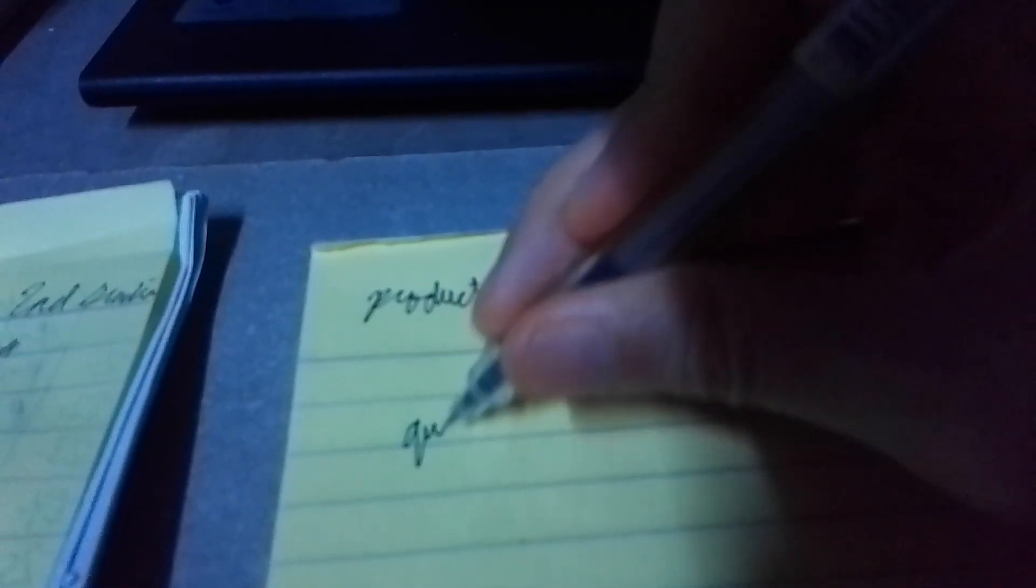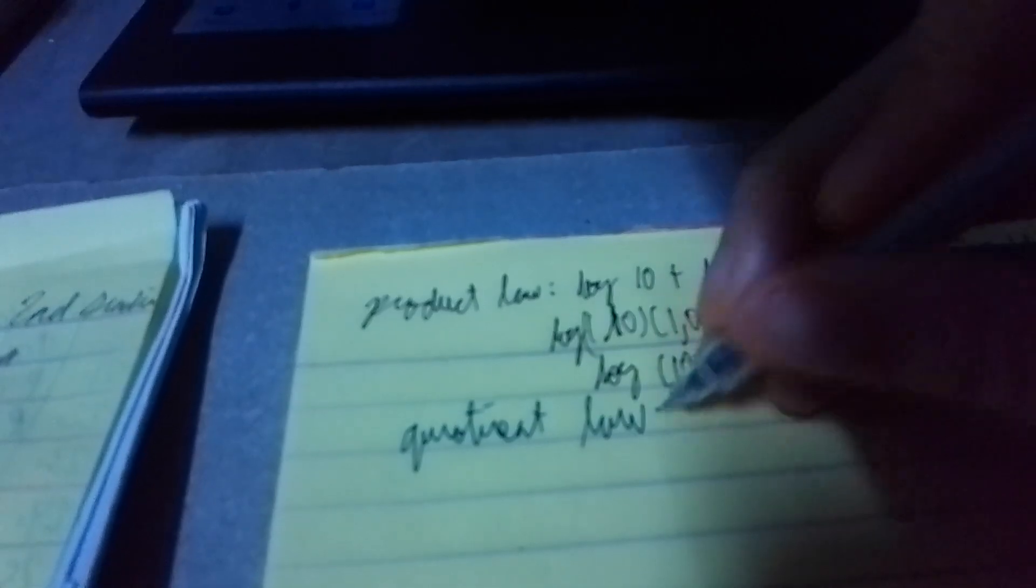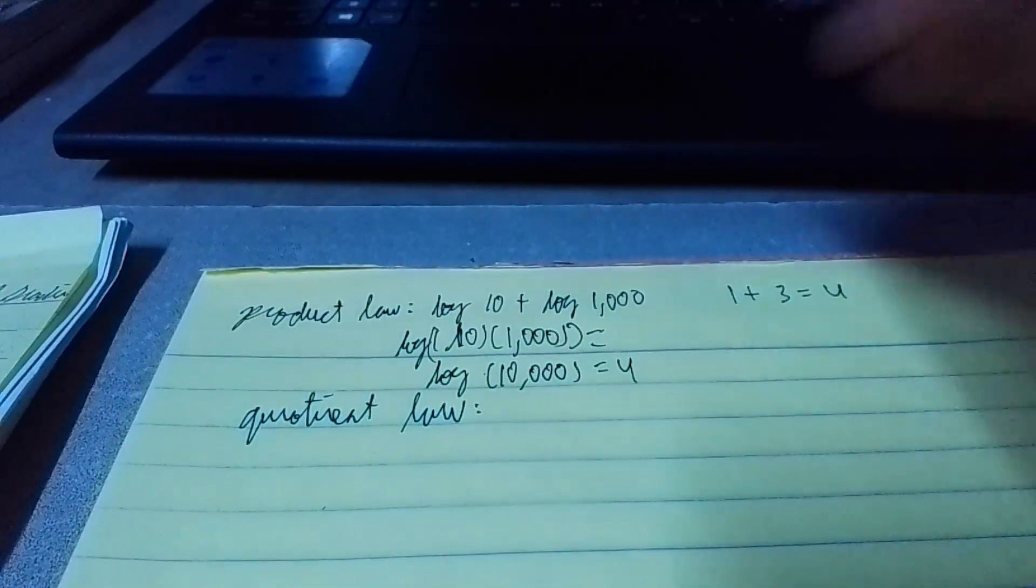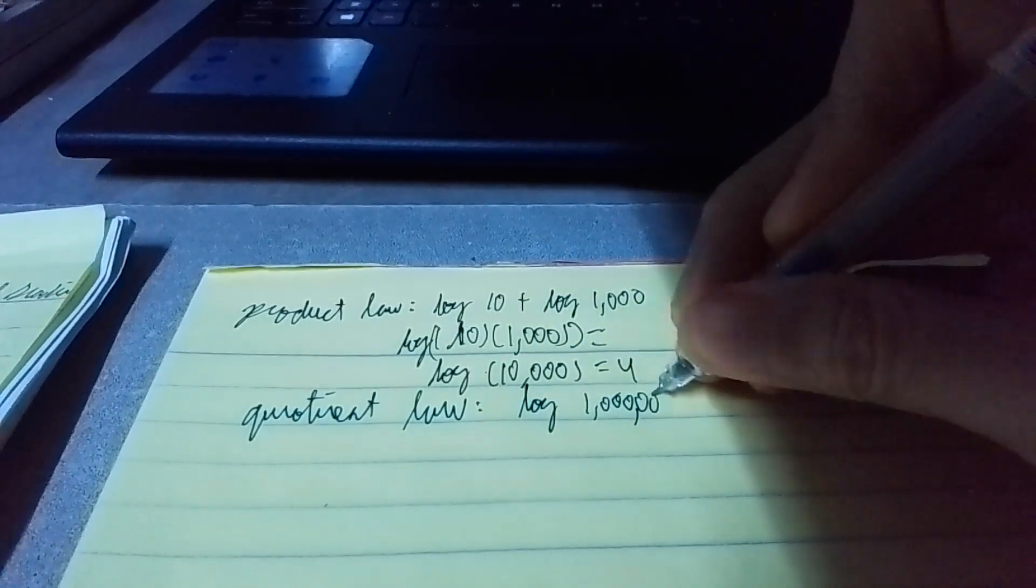But if you were to do this separately, kapag ginawa mo yun individually, log of 10 is 1. Log 1000 is 3. Adding the 2 numbers, you get 4. So this checks. Yun ang product law.